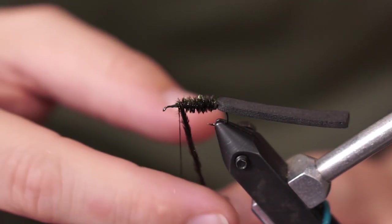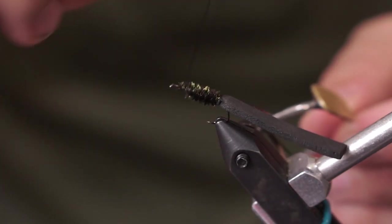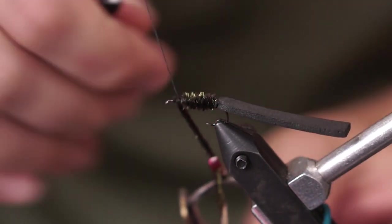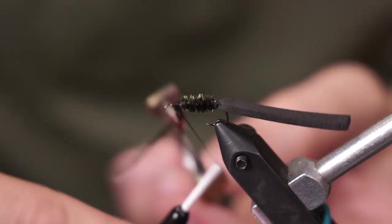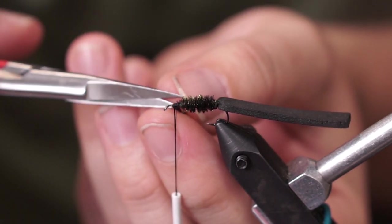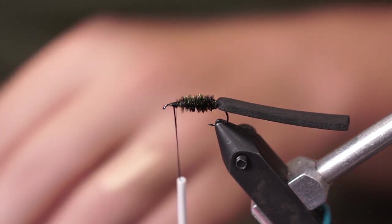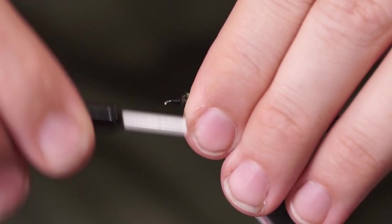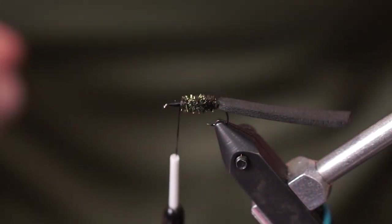That's pretty good. And the nice part is with the hackle pliers, I can let that go. So now I'm ready to take my thread and wrap behind my material, in front of my material, behind and in front. And again, as always, that securely locks our material into place on the hook. So I can cut that off and then clean up by wrapping back. So that's good and locked in.